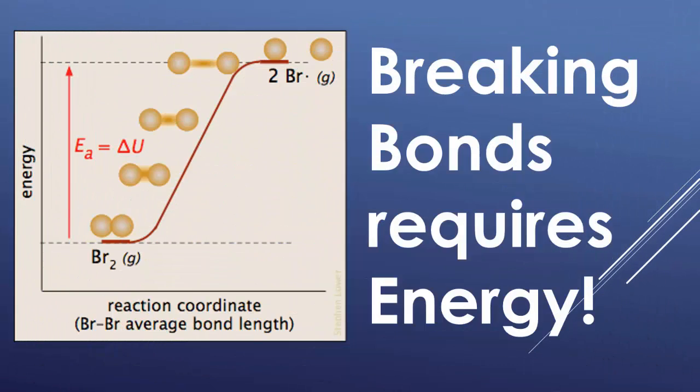So, just so you guys remember, breaking bonds requires energy. On the left, at the bottom of that hill, we have bromine, diatomic bromine as a gas. And as you see, as you increase the amount of energy, the bonds are getting further and further apart until they eventually snap and the bonds break, making two moles of just bromine, two separate atoms of bromine.